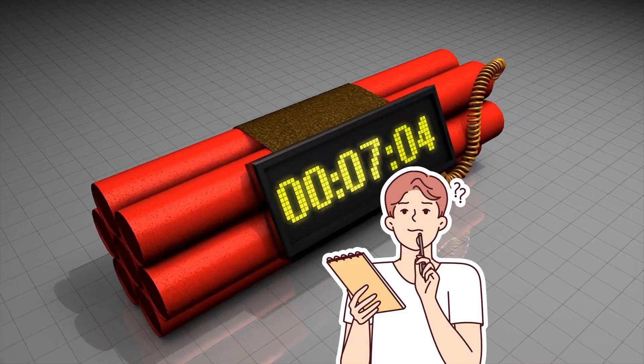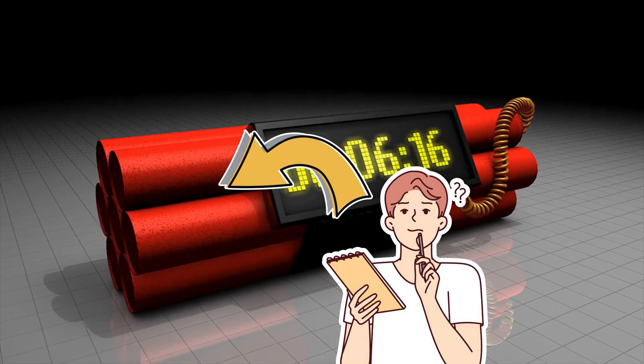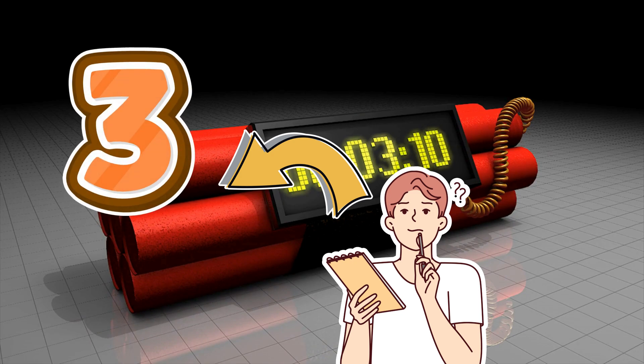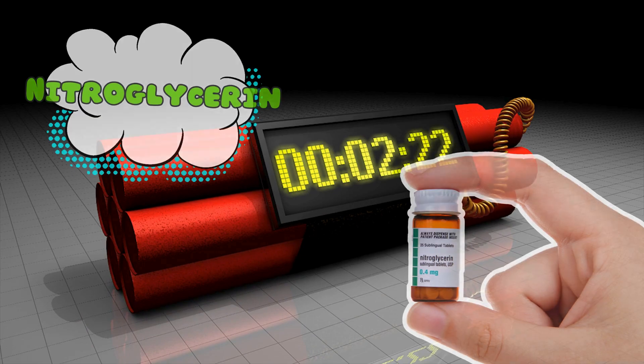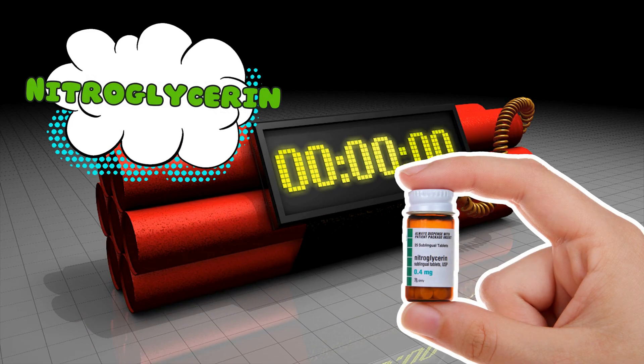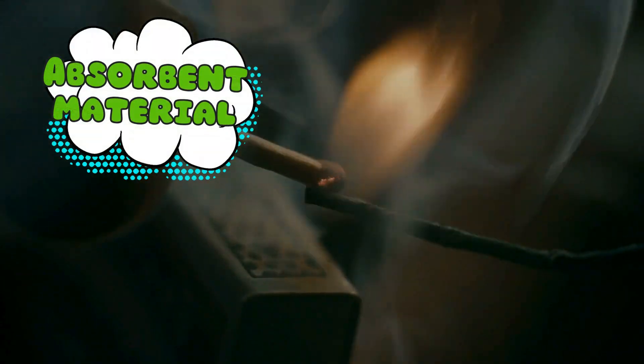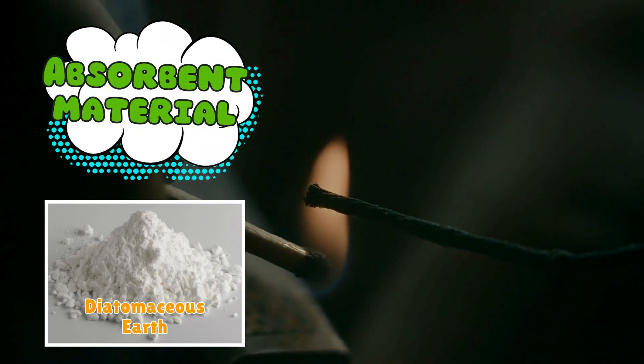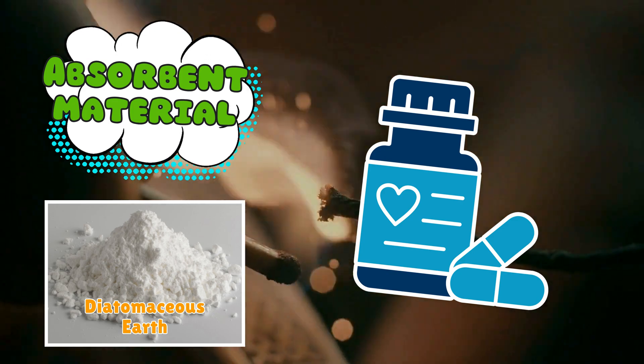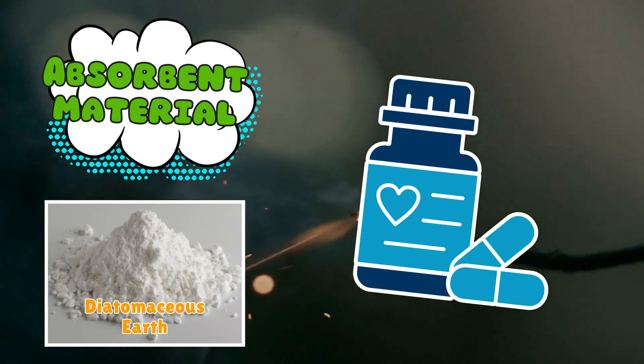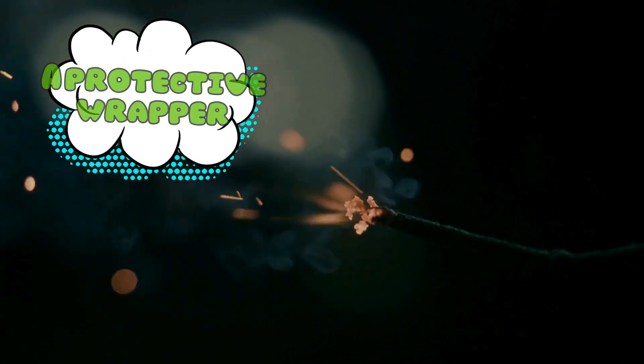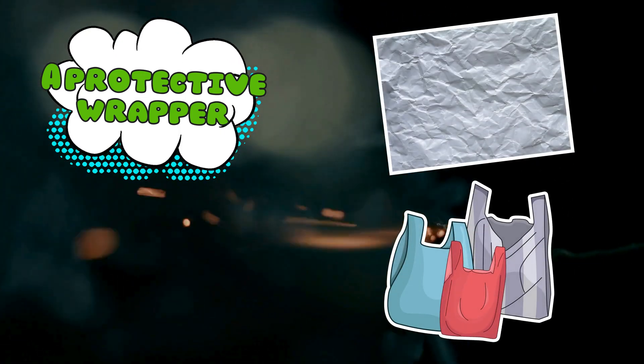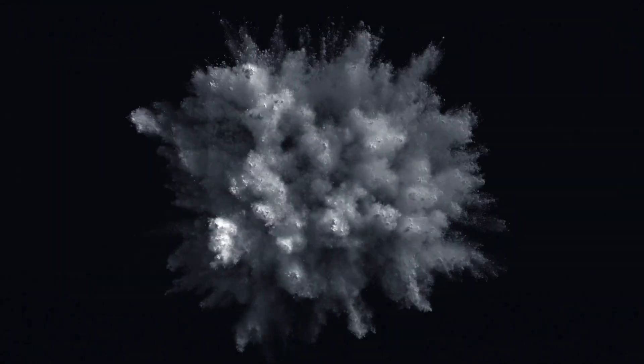Okay, so what's actually inside those iconic red tubes? Classic dynamite contains three key ingredients. Nitroglycerin, the volatile liquid explosive. Absorbent material, usually diatomaceous earth, to stabilize the nitroglycerin and stop it from exploding every time someone hiccups. A protective wrapper, typically waxed paper or plastic, because even explosions need fashion.